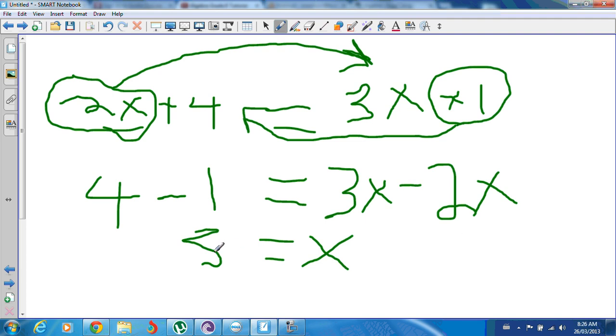And we could check our answer by putting three in for x here. So two times three is six. Plus four is ten. And we could also try to put three in over here. Three times three is nine. Plus one more is ten. So we know that it is correct.